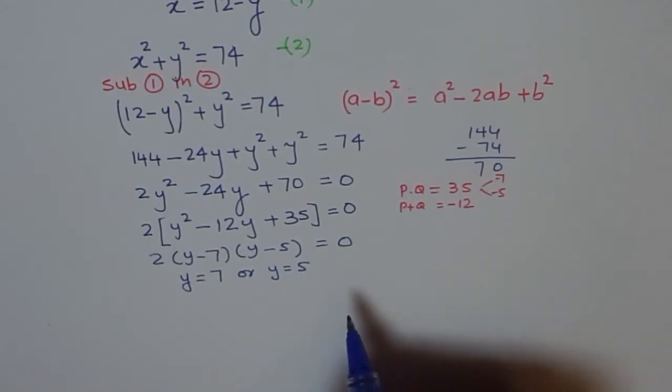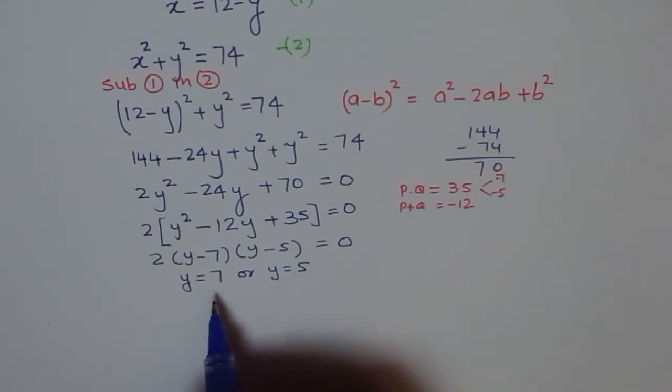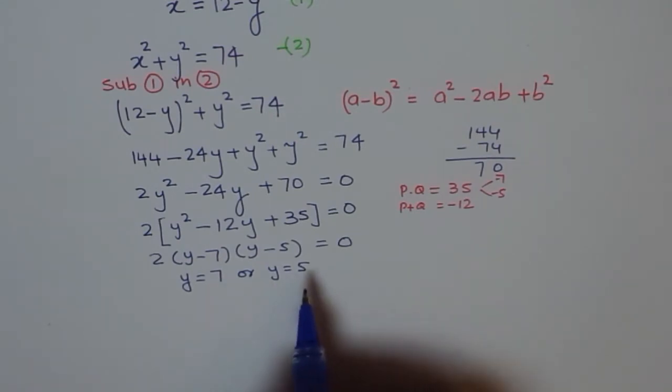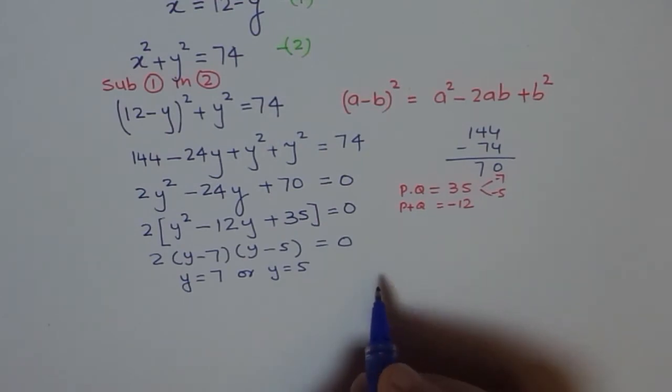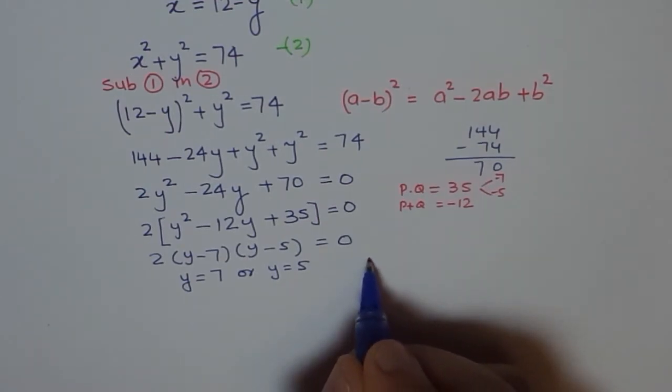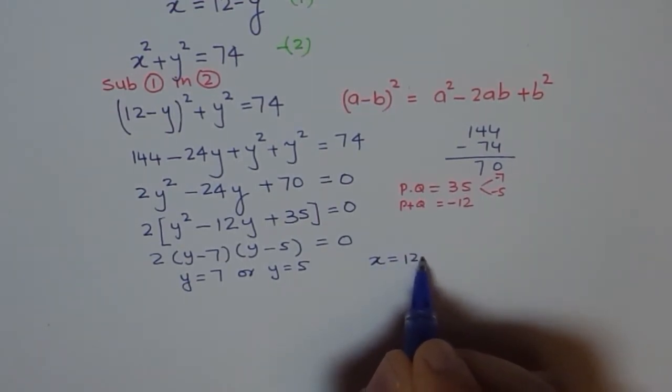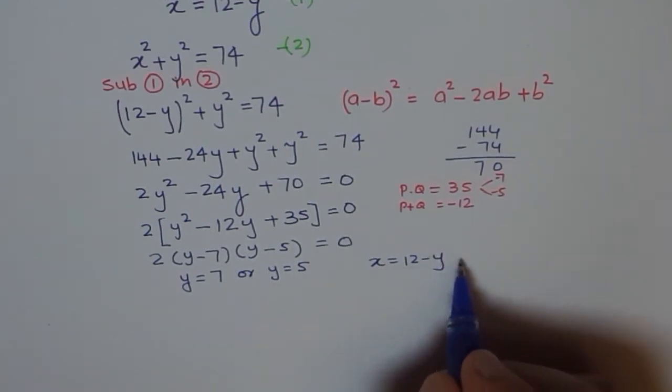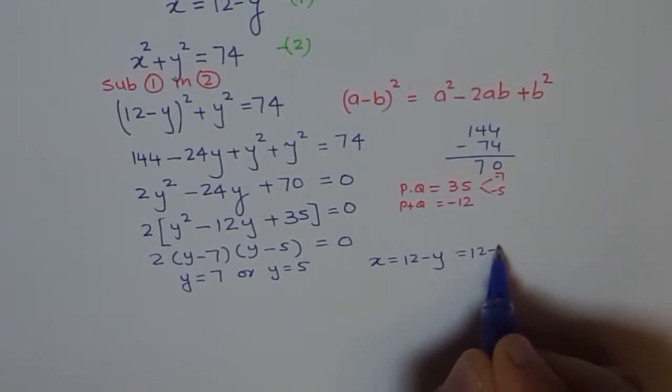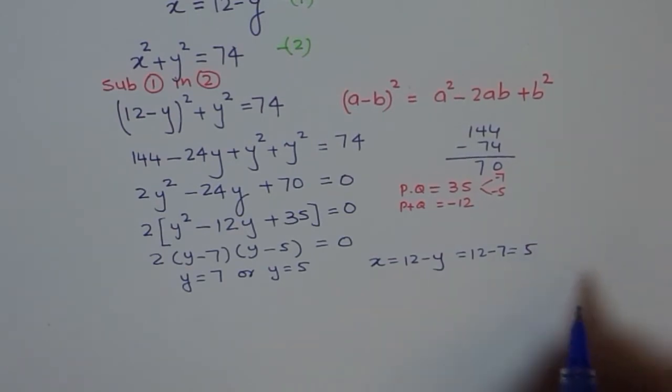Now, this is our y value. Now, you said 2 numbers when added, they give you 12. So, if y is 7, then x is 5. If y is 5, then x is 7. You can also find the value of x using our initial formula. Where equation 1 said x is equals to 12 minus y. So, if I use 7, I get 12 minus 7 equals to 5.